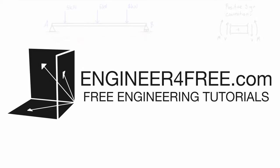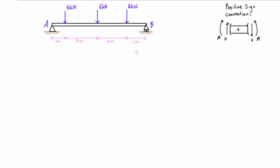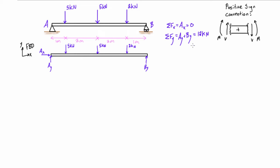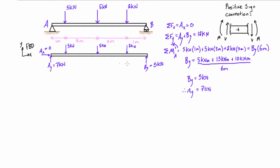Welcome back. In this video we are drawing the shear force diagram and bending moment diagram for the simply supported beam that has three point loads on it. The first thing that we want to do is draw the free body diagram and then solve for the reaction forces at A and B. So we find that Ay is equal to 7 kN and By is equal to 5 kN.